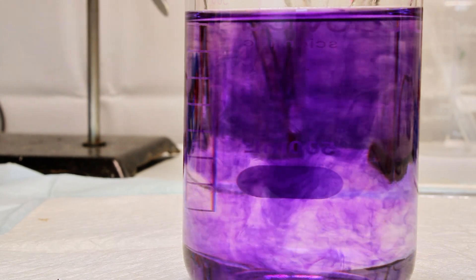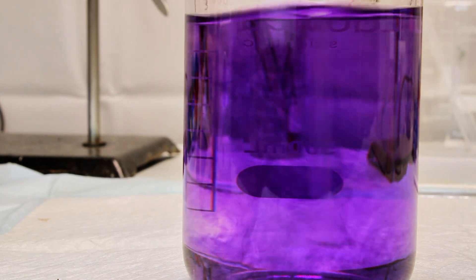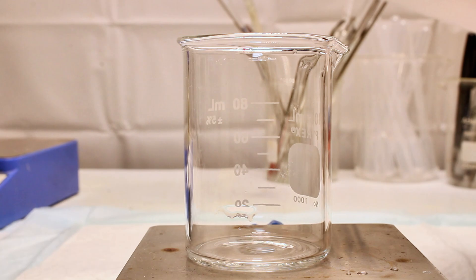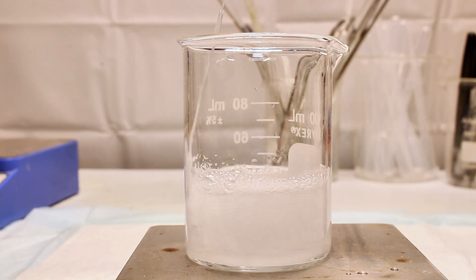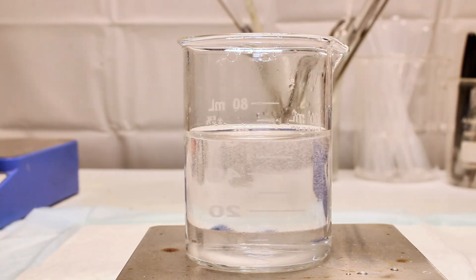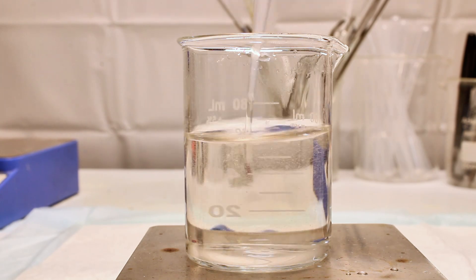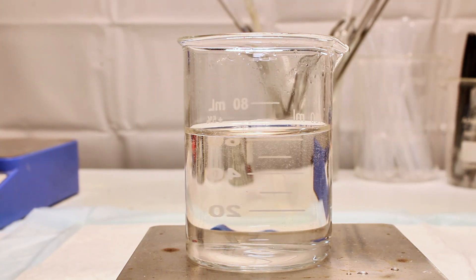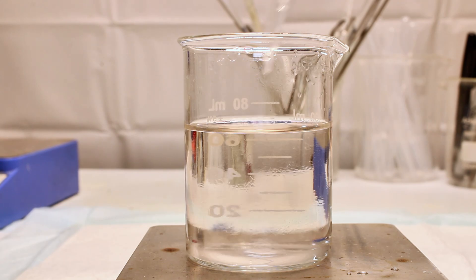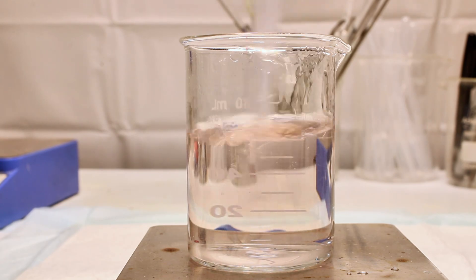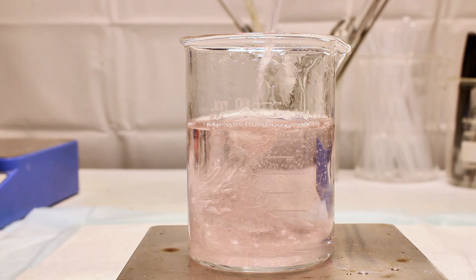To demonstrate the ketone test, I simply added a few milliliters of the nitroprusside solution to some acetone. And I wasn't really sure if this would work, but I figured acetone is a ketone, so why not? This reaction wasn't nearly as dramatic as the sulfide test, but after a minute or so, it did become a faint purple, which became slowly darker over time.